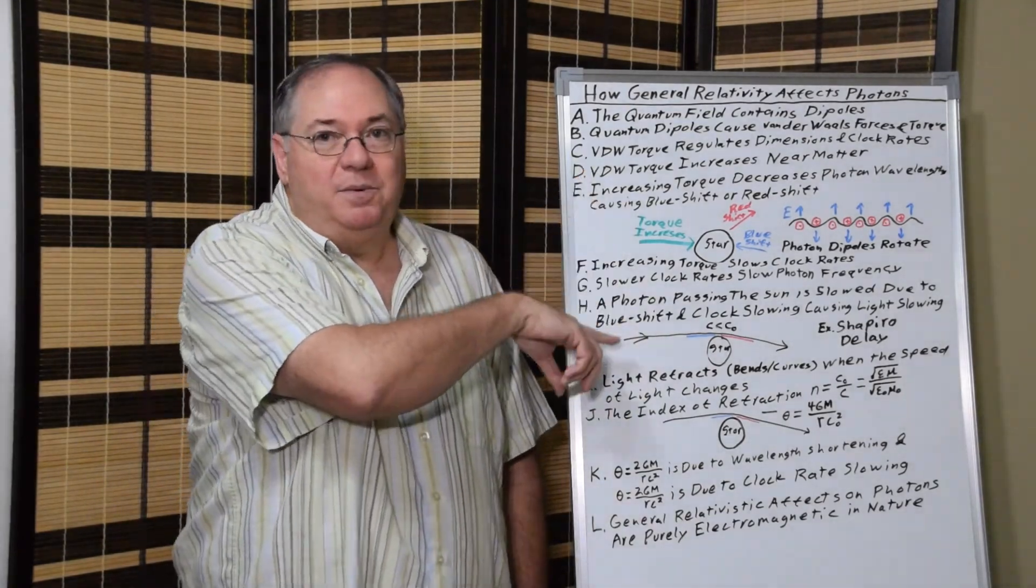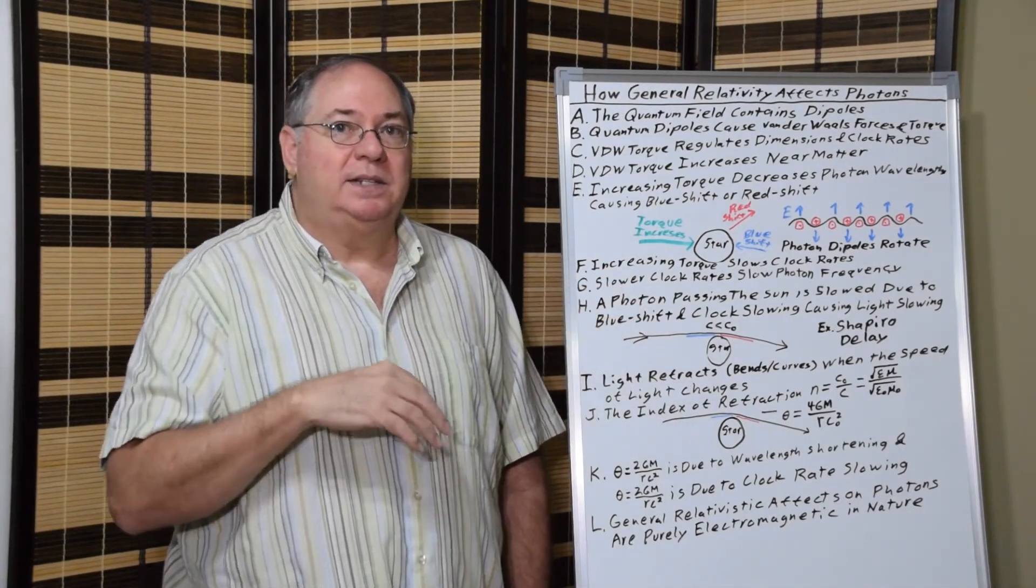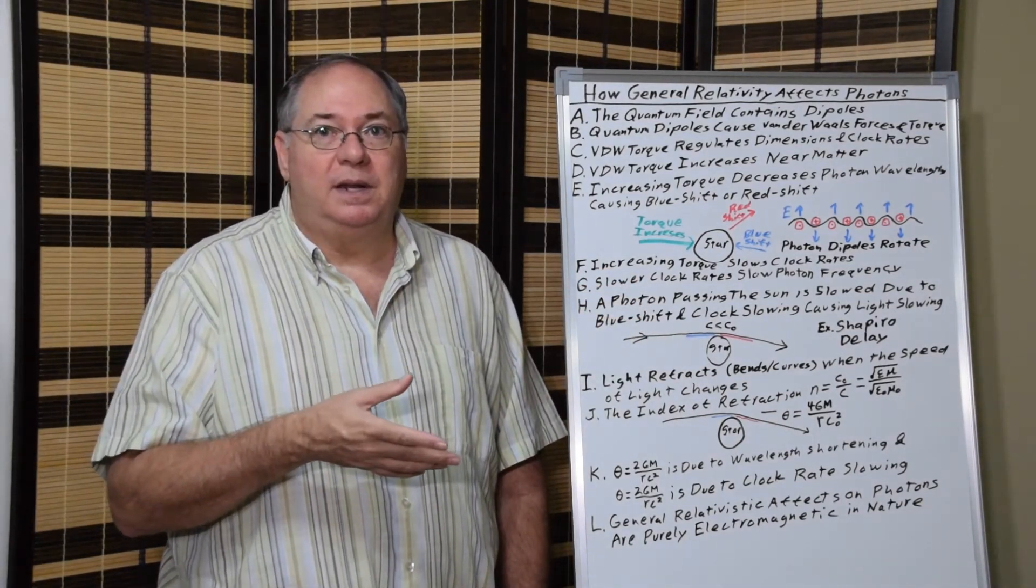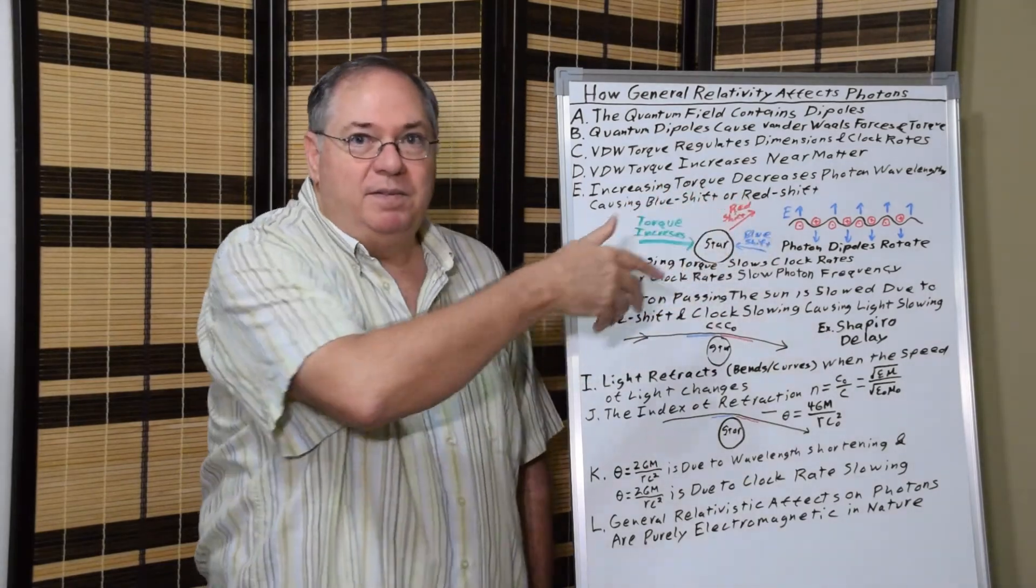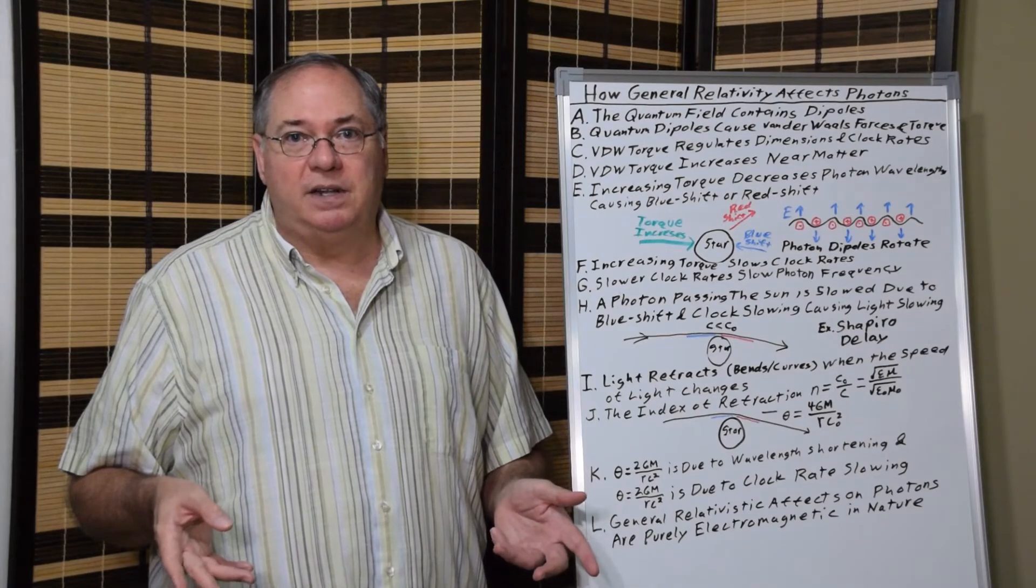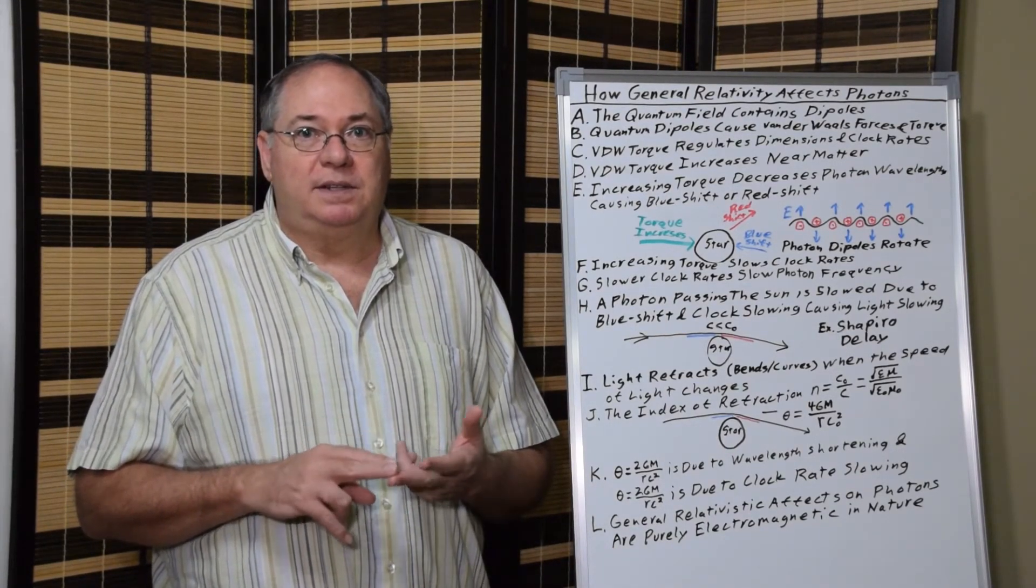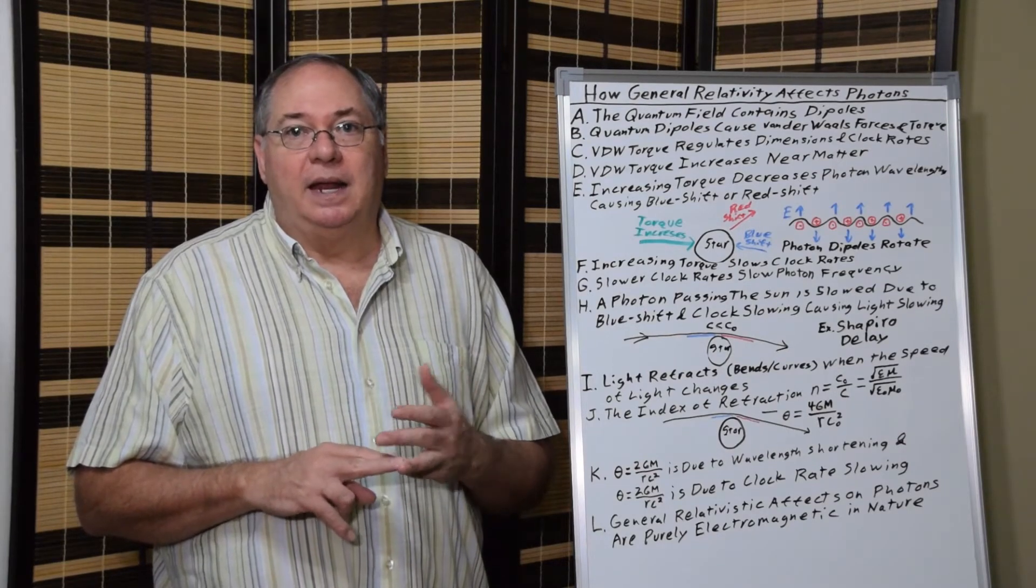All we need to do is think about what's going on with the van der Waals torque and its effect on the permittivity and permeability and the rotation of the photons. And that gives us the three main proofs of general relativity related to photons: the blueshift and redshift, the light slowing, and light bending.